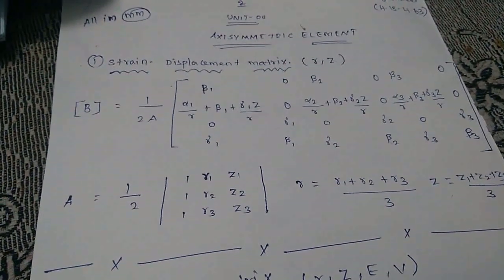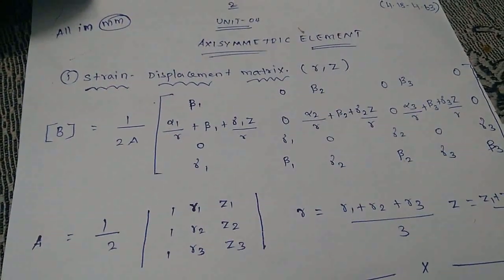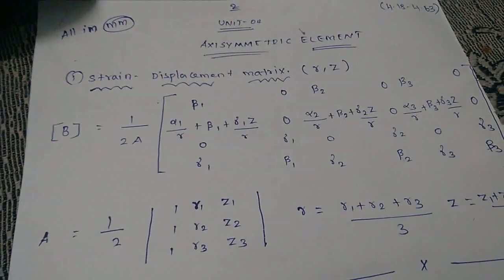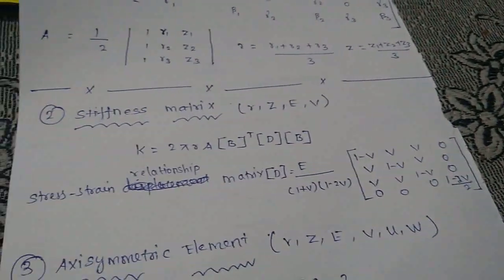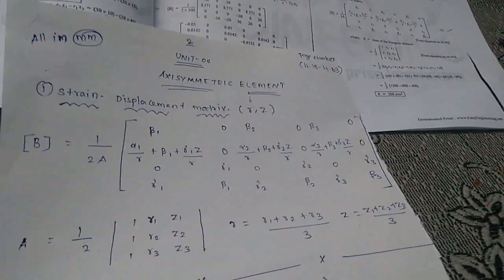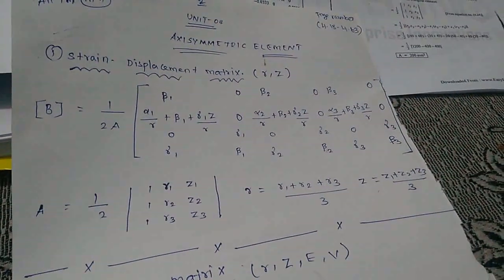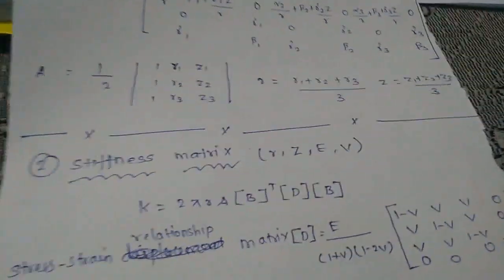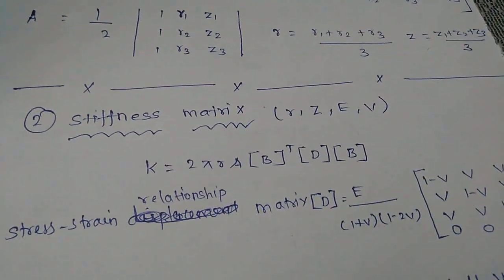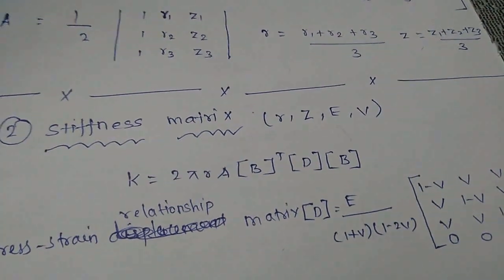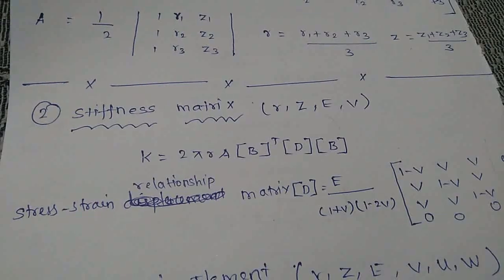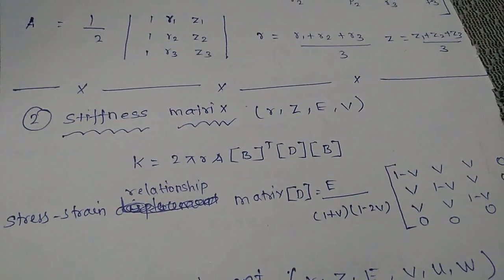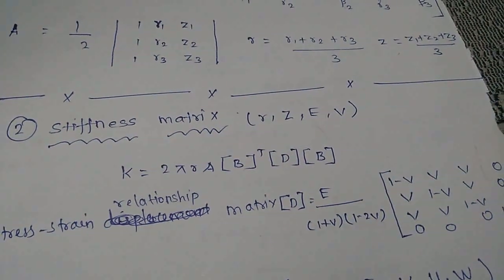This is the stress-displacement matrix. Sometimes coordinates R1, Z1, Z2, Z3 are used. The stiffness matrix for the axisymmetric element involves strain-displacement with R and Z given data. The stiffness matrix K equals 2 pi R times A times B-transpose times D times B.